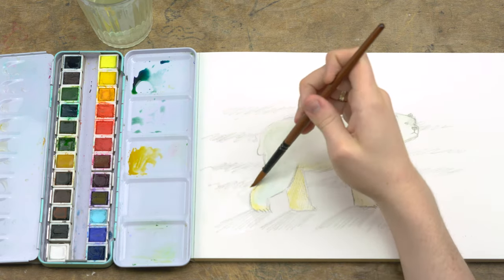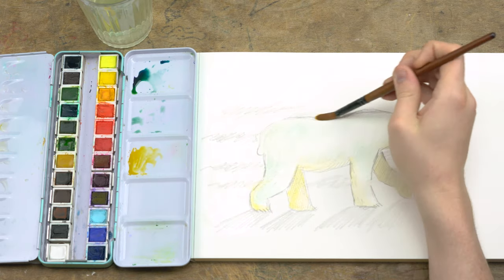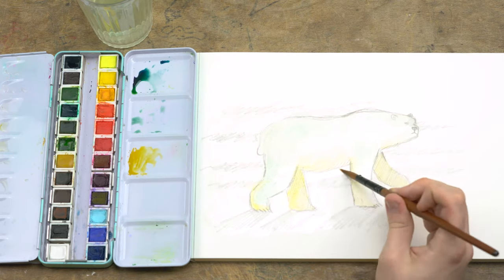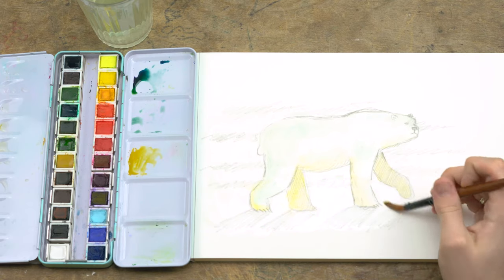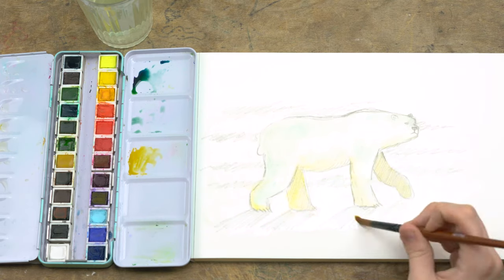Now you can apply the same principles of a wash to the background. Again, the polar bear isn't just floating around in space and snow catches the light a bit more interesting when you're painting it. You don't want to just paint white.